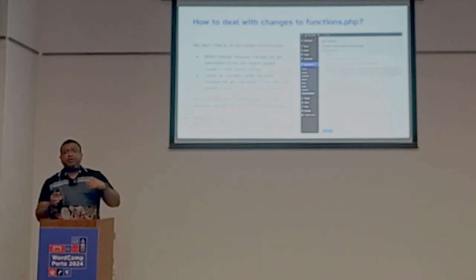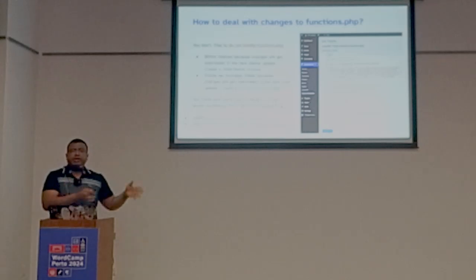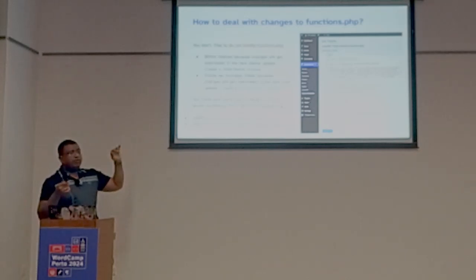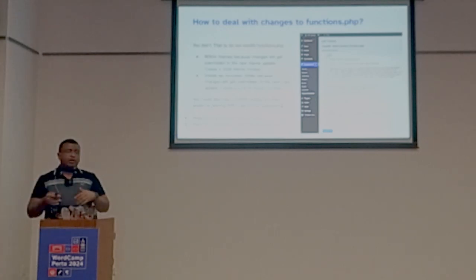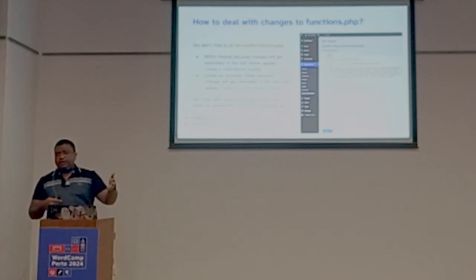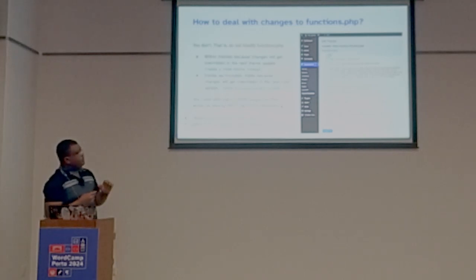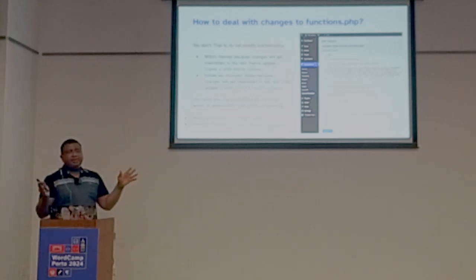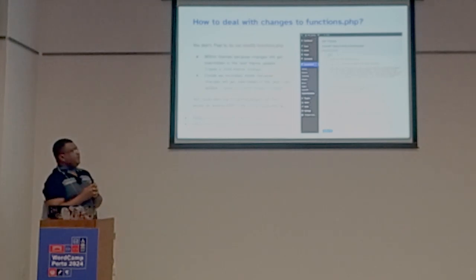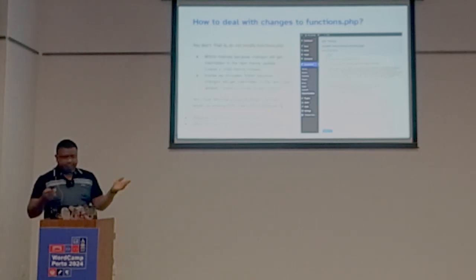Regarding the functions file: do not modify the one that comes with wp-includes. Instead, create a child theme or a custom plugin. The reason is that the next time you update WordPress core or a theme, that file will be overwritten and you will lose your changes. Even though Git might flag the change, if you are not careful you could lose it. Another option is using a plugin to manage functionality, but a child theme or custom plugin is the recommended approach.